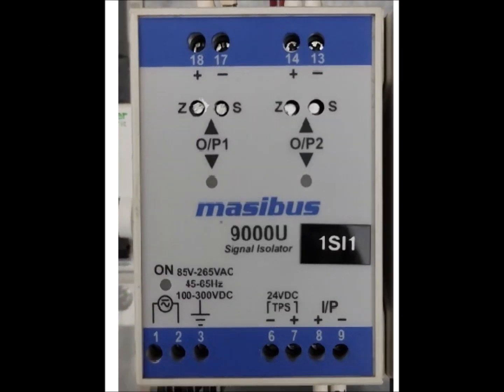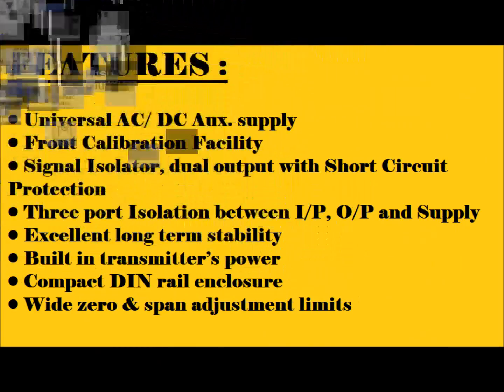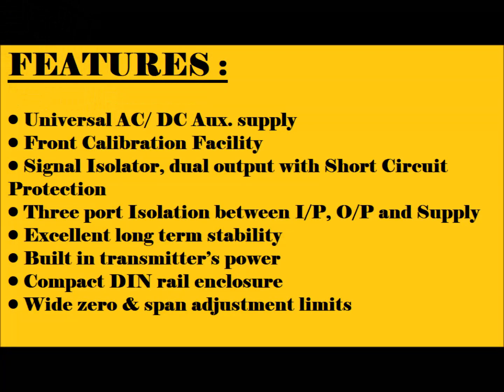Generally, you will see any company's Signal Isolator and all the working principles are almost the same. In this video, as a reference, I have used Masibus Make and its model number is 9000U.